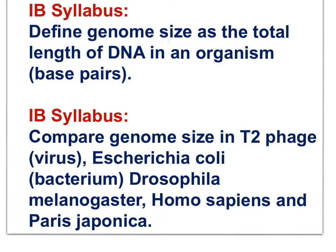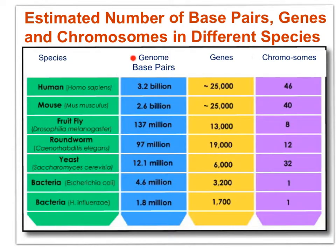Genome size is defined as the total length of DNA in an organism. Comparing genome sizes: the T2-5 virus, Escherichia coli, Drosophila melanogaster (the common fruit fly), Homo sapiens (humans), and Parastroponica (a plant). The human genome at 3.2 billion base pairs is huge relative to bacteria or the fruit fly.